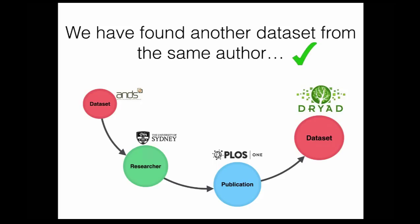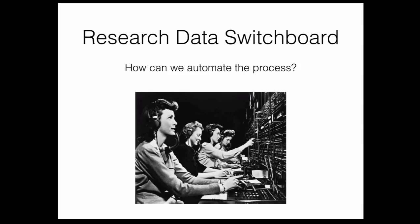I remember when I was doing my PhD, I was doing similar things around the literature to find other books by the same author — it gives a cohesive view of the activities and discoveries in that domain. The problem is that this is not a scalable platform. So from that, we got to the concept of: can we actually automate this process? And that's how we got to the metaphor of the switchboard.